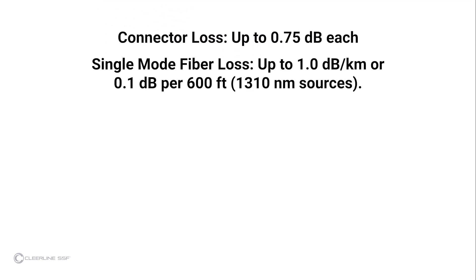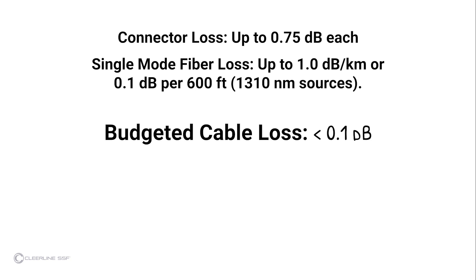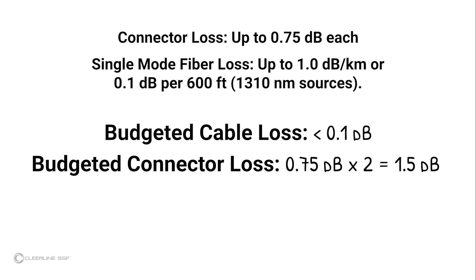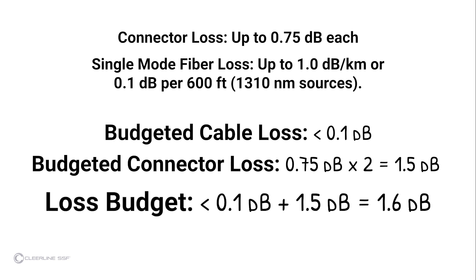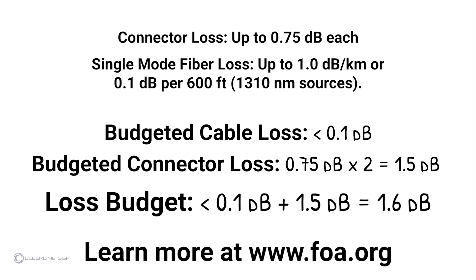In this video, the cable under test is quite short, so the cable loss calculation is less than 0.1 decibels. The loss calculation for the connectors is 1.5 decibels — 0.75 decibels per connector times 2 connectors. The test result is less than 1.6 decibels, so the cable passes industry standards for link loss. Refer to the included Fiber Optic Association guidelines or visit the FOA on the web for further information on fiber testing or installation.